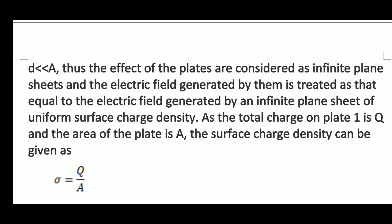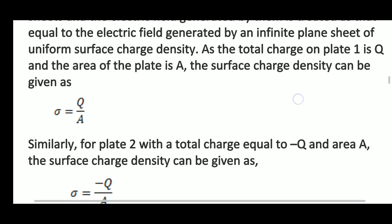Here we have assumed that the distance d is much much smaller than the area A. Thus the effect of the plates is considered as infinite plane sheets, and the electric field generated by them is treated as equal to the electric field generated by an infinite plane sheet of uniform surface charge density. The total charge on plate one is Q, and the surface charge density is given as sigma equals Q by A.